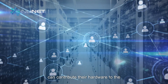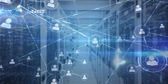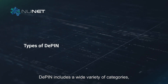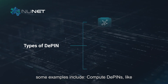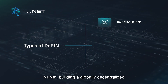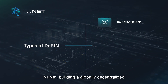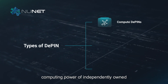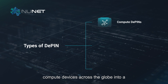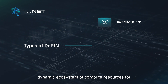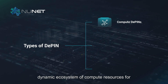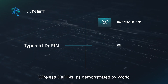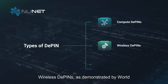Anyone can contribute their hardware to the network. DePIN includes a wide variety of categories. One example is compute DePINs, like NewNet, which is building a globally decentralized computing framework that combines the latent computing power of independently owned compute devices across the globe into a dynamic ecosystem of compute resources.